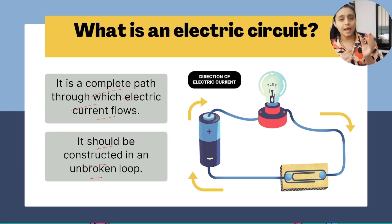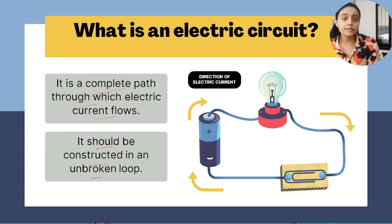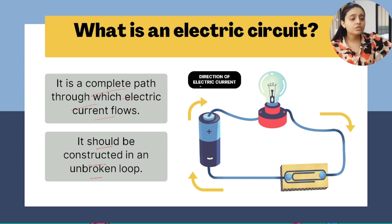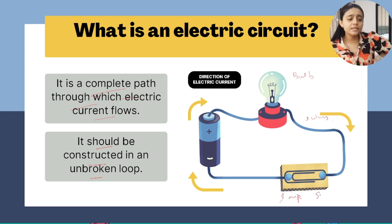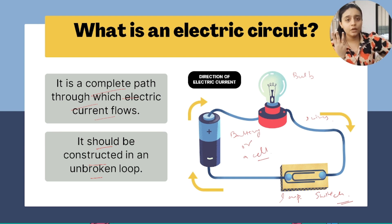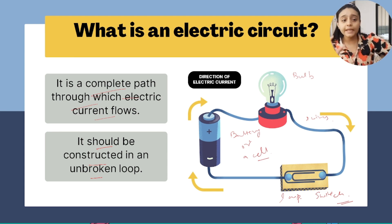What is an electric circuit, students? It is a complete path through which electric current flows. The complete path through which current will flow should be constructed in an unbroken loop — there should be no broken loops in between this arrangement. If there are any broken loops, it will result in incomplete flow of current. Current will not flow smoothly, and broken connections can result in fuses or even electric shocks. This path involves a bulb, a wire, a switch, and a battery or cell.